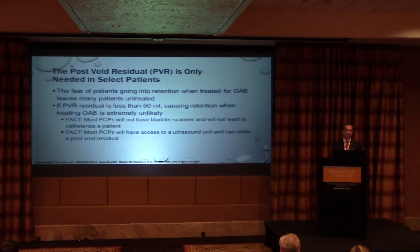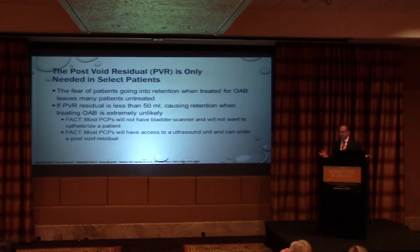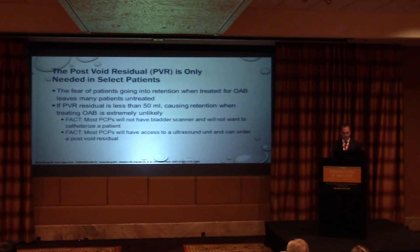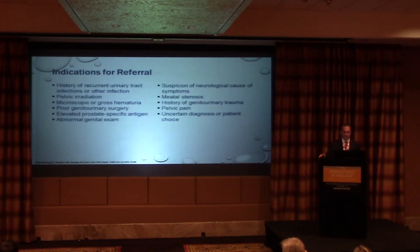There's an urban myth that treating OAB in men will put them into urinary retention — that has been debunked. If you have a good flow, the chance of going into retention is very low. If there's any concern, check a post-void residual. My meta-analysis showed that if your post-void residual is less than 50 mLs, the chance of a problem is very low. Primary care can get a residual at a local diagnostic ultrasound facility.